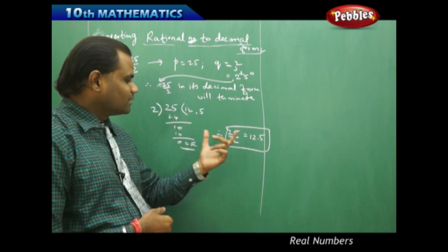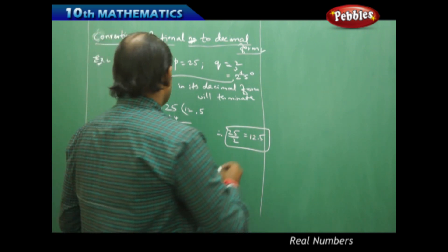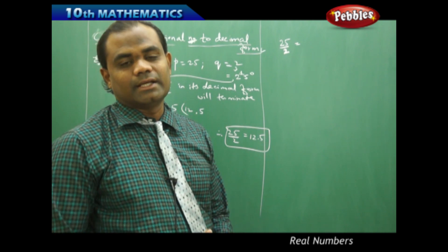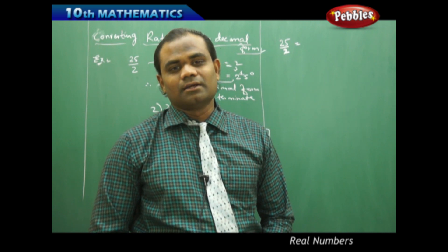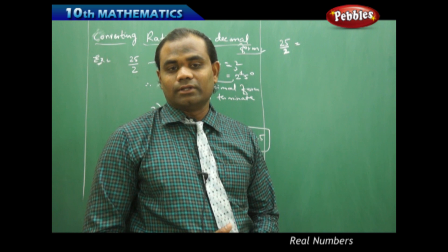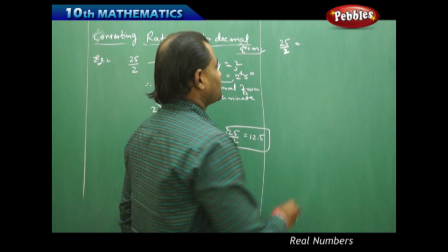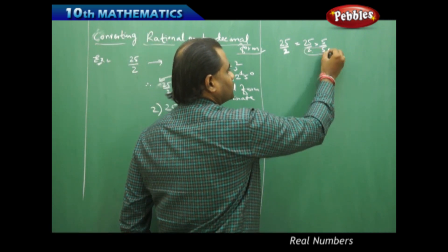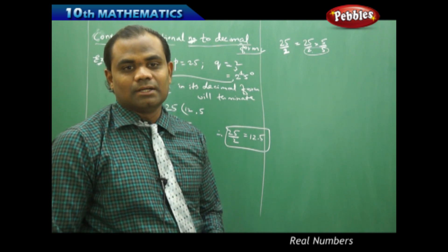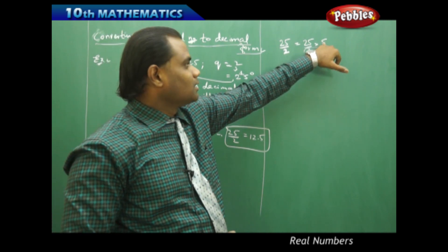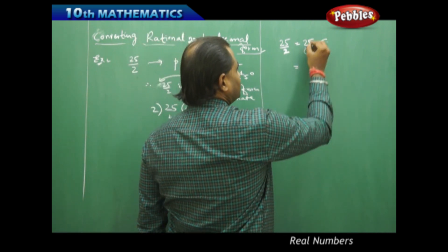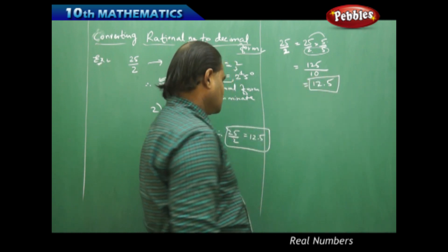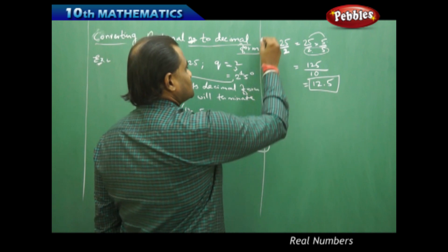There is an alternative method to find the same fraction converted to decimal. For 25 over 2, I always try to make the denominator a power of 10. When you have the denominator as products of 2s and 5s, making the denominator a power of 10 is the goal. I write 25/2 multiplied and divided by 5, because multiplying 2 × 5 gives 10. This gives 125 over 10, which equals 12.5. That is the alternative method.